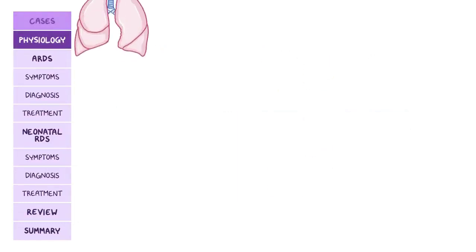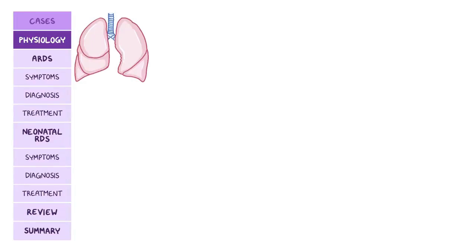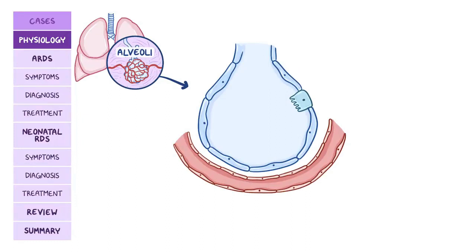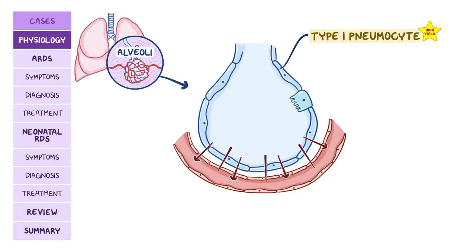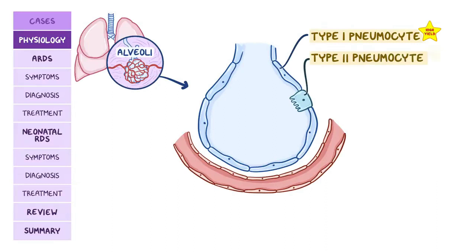Now both people are in respiratory distress, but first a bit of physiology. Normally when you breathe in, the air reaches the alveoli, which are made up of two types of pneumocytes. Type 1 pneumocytes are thin and have a large surface area that can facilitate gas exchange. More important for the exams are the type 2 pneumocytes, which are smaller, thicker, and have the ability to proliferate in response to lung injury.